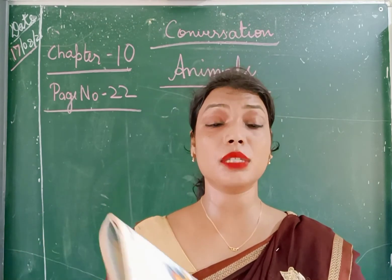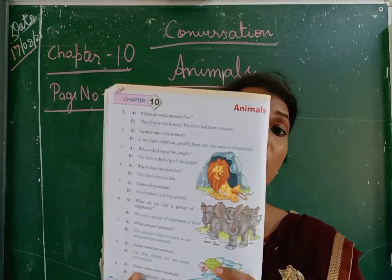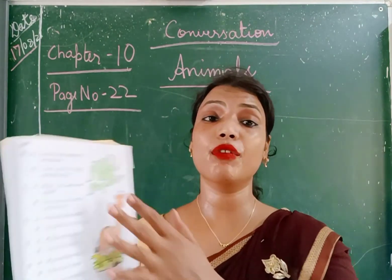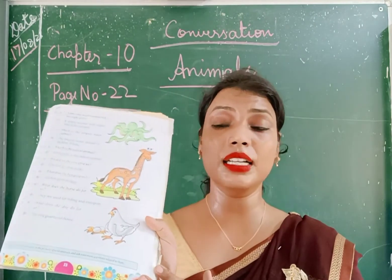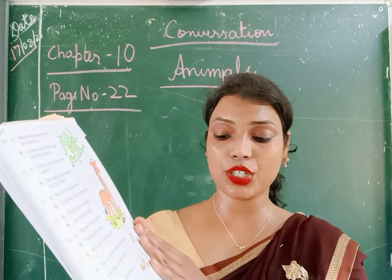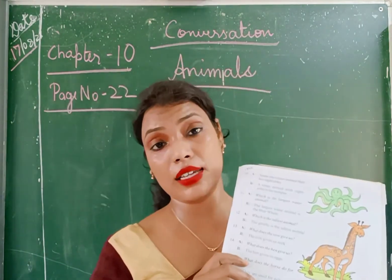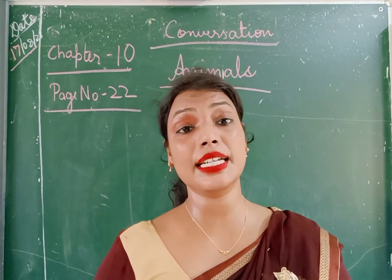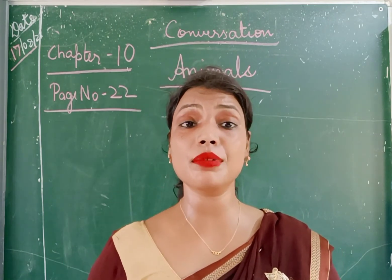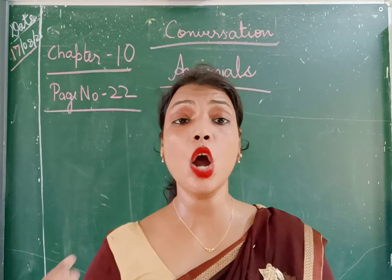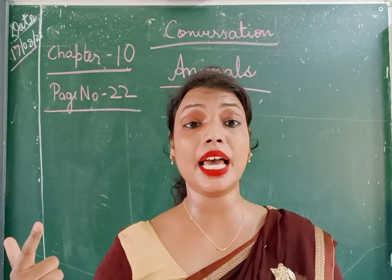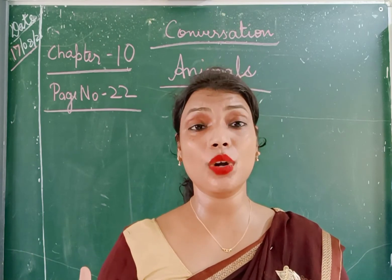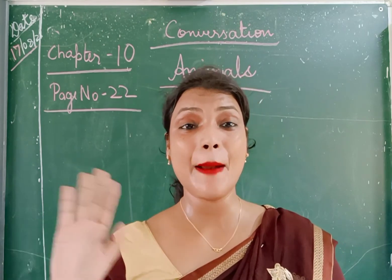For today, children, this much only — please know this. First, read the chapter nicely, and in the next class I will explain the rest. Page number 23 I will explain in the next class. Till then, read the chapter six to seven times nicely and try to remember what is a wild animal, what is a pet animal, what is a water animal. So take care, children. Bye-bye.